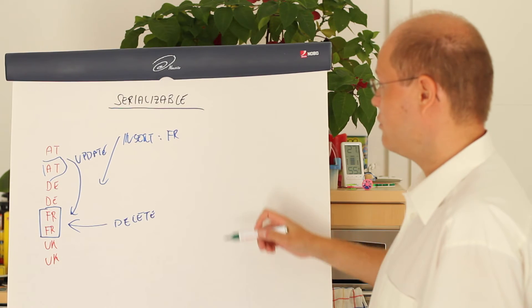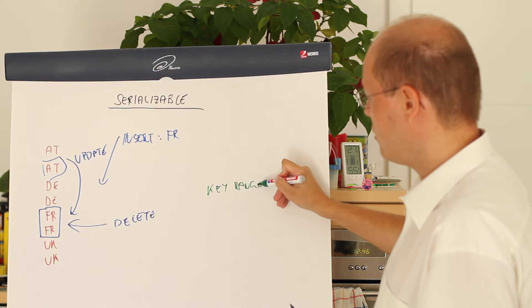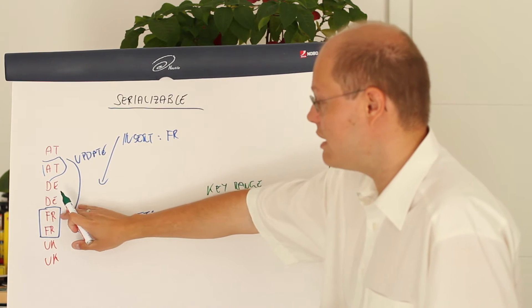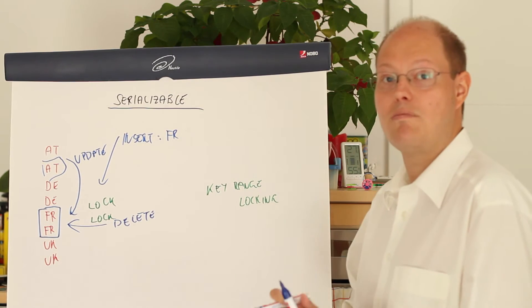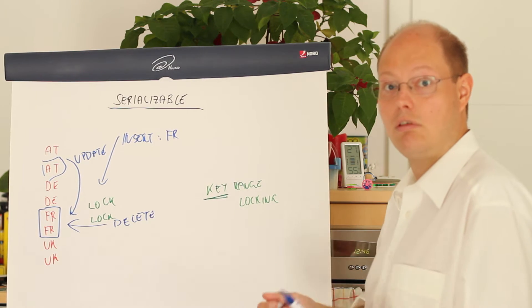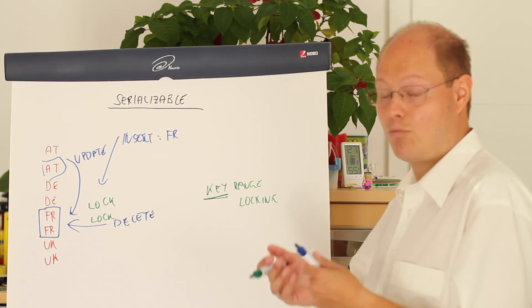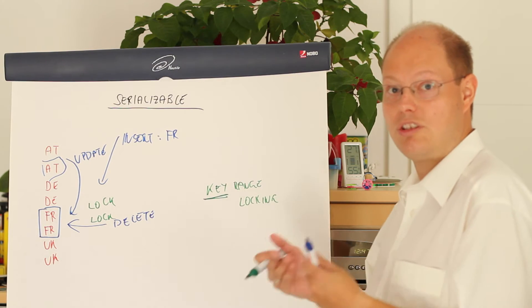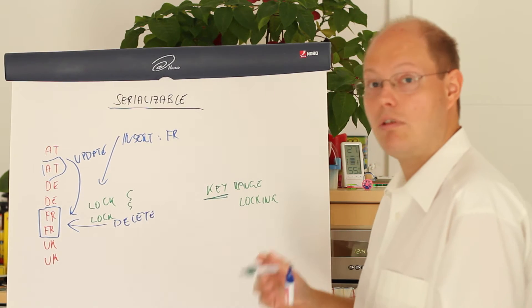SQL Server uses in the isolation level serializable internally a so-called key range locking technique. Key range locking means that SQL Server places specialized locks on every one of those records and makes that range of records stable. As the name already implies, you need a supporting non-clustered index on that specific column. Without a non-clustered index, SQL Server has no key on which it can place the lock, and in that case SQL Server just locks every record with a shared lock.